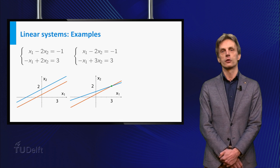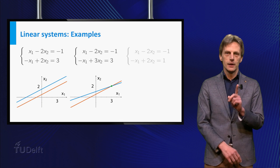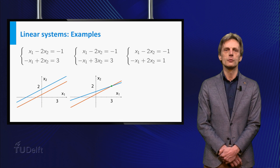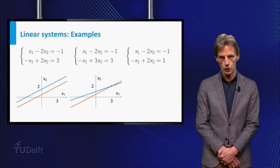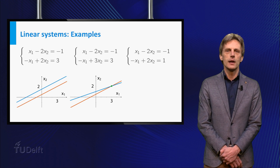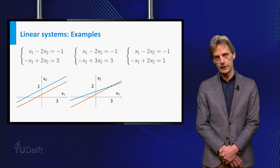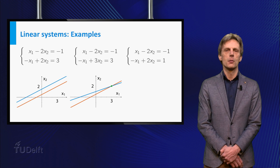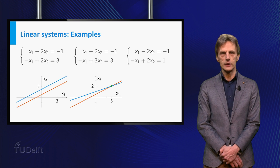Can you think of yet another situation? Here is a third possibility for a system of two equations in two unknowns. x1 minus 2 times x2 equals minus 1, minus x1 plus 2 times x2 equals 1.